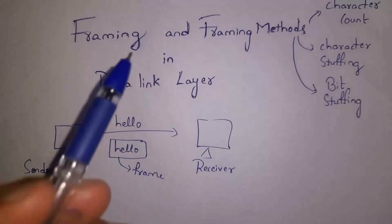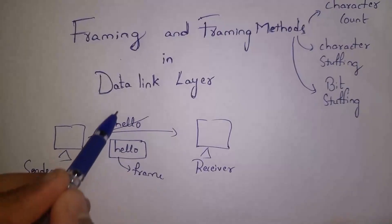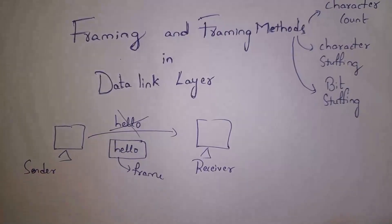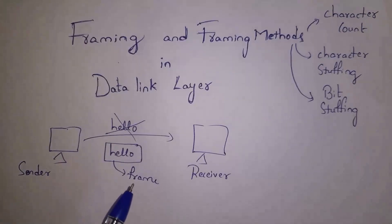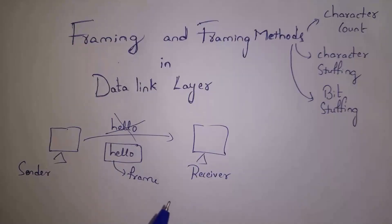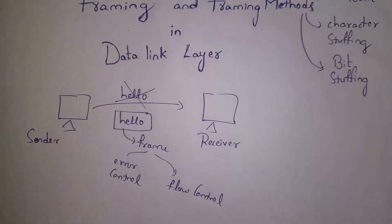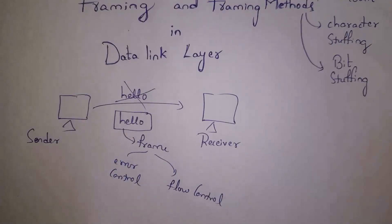The data link layer will send our data from sender to receiver. The data link layer will not send data directly to the receiver; instead, it will place our data in a frame and then the complete frame is transferred to the receiver. So framing is like packing — instead of sending data directly, the data link layer packs data in a frame and then transfers the complete frame.